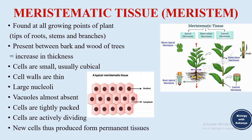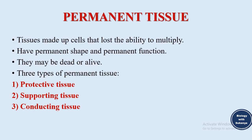New cells produced by meristematic tissue form permanent tissues, which is the next type we will discuss. Permanent tissue consists of cells that have lost the ability to multiply. They have permanent shape and permanent function, and may be dead or alive. Permanent tissue can be divided into three types: protective tissue, supporting tissue, and conducting tissue.